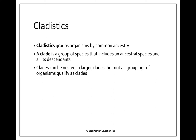Cladistics is the process of grouping organisms based on common ancestry into what's called a clade. A clade is a group of organisms that includes the ancestral species — whatever the most recent common ancestor was — and all of its descendants. This means that everybody most closely related to the single ancestral species is included. This is typically how we like our organisms grouped on phylogenetic trees, but not every grouping will qualify as a clade.